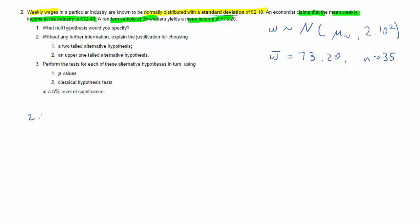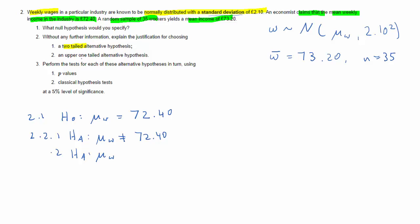With that information, the question is: what null hypothesis would you specify? If someone claims something, the null hypothesis is that something equals something — we use that as the null hypothesis: H₀: μw = 72.40. For the alternative, we have two options. A two-tailed alternative would be μw ≠ 72.4. The one-tailed upper-tailed alternative is that μw is larger than 72.4.